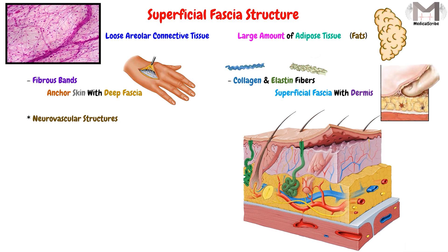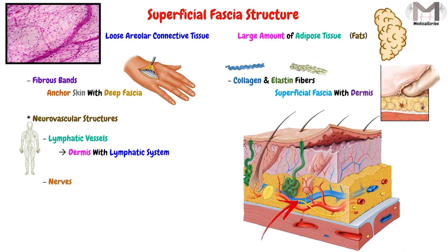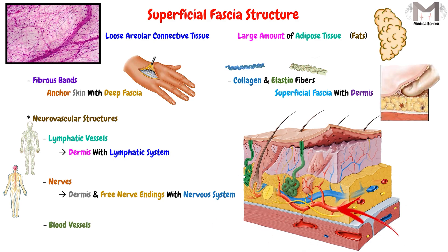There are also neurovascular structures in this fascia. These include lymphatic vessels, which connect the dermis with the lymphatic system; nerves, which connect the dermis and the free nerve endings of the superficial fascia with the nervous system; and blood vessels, which connect the dermis layer with the circulatory system.